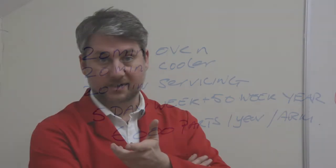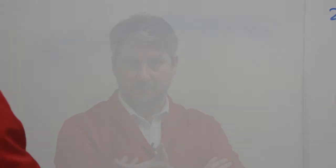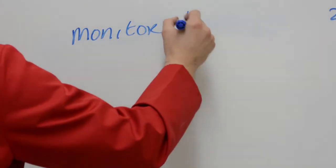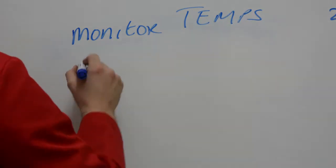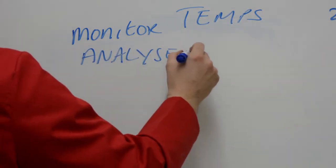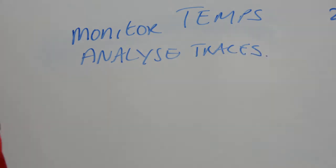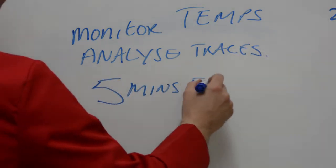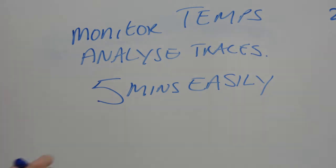These are basic calculations that you probably do every day in your plant. If you monitor your temperatures, analyze the traces, we could reduce your cycle time by 5 minutes very easily without too much hard work involved.